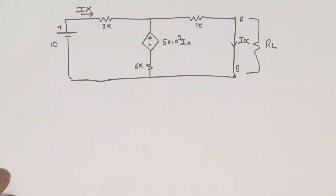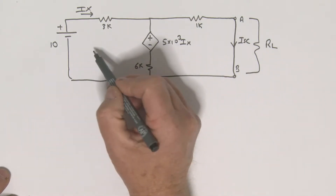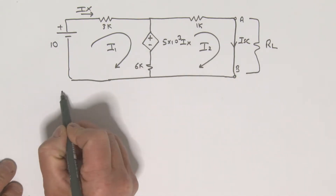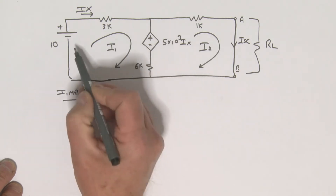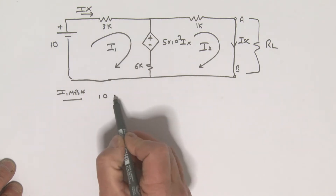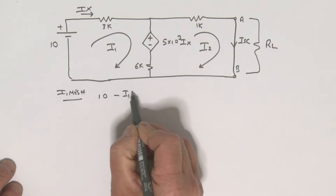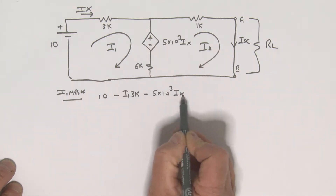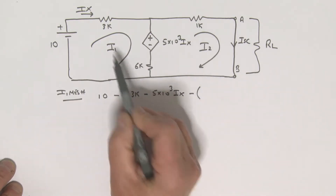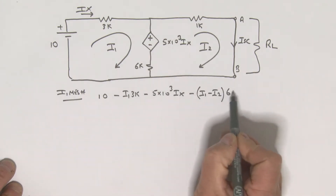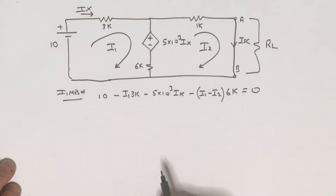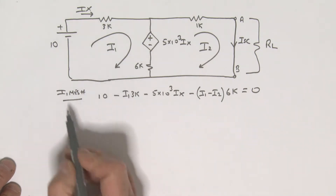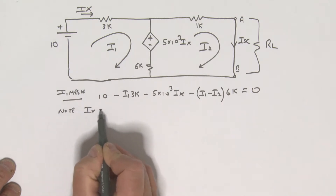One way to do this is to define two mesh currents I1 and I2. For the I1 mesh, going around: we have +10, minus I1 times 3k, minus 5 times 10³ times Ix, and minus (I1 minus I2) times 6k, all equal to zero. Note that Ix is the same as I1.